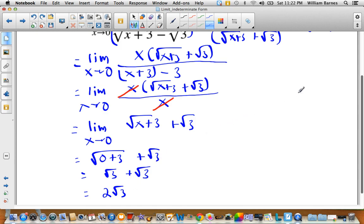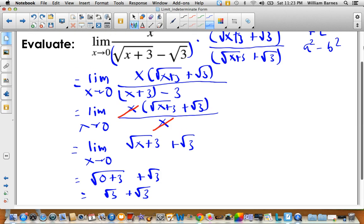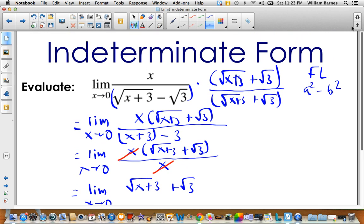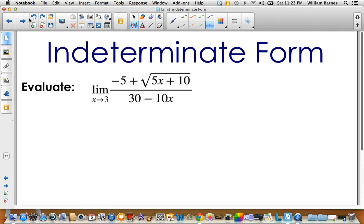So again, when you see, when you initially sub and you get 0 over 0, then that's when you start thinking indeterminate form. So let's have a look at another question, a slightly harder version of the conjugate. So you have this guy. And you can see if I subbed in 3 right here, I would have 30 minus 30. And on the top here, if I subbed in the 3 as well, I'd have 15 plus 10 is 25. Square root of 25 is 5. Subtract plus negative 5 is 0. So this is another indeterminate form question.